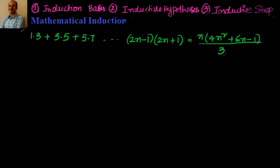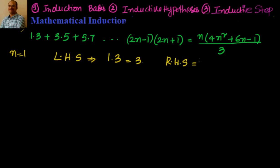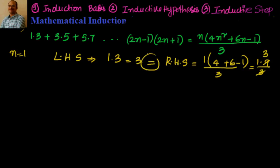First we will see whether this satisfies for n equal to 1 or not. For n=1, the LHS is the first term, which is 1×3 = 3. On the RHS, substituting n=1 gives 1×(4 + 6 − 1)/3 = 1×9/3 = 3. Therefore LHS equals RHS for n equal to 1.